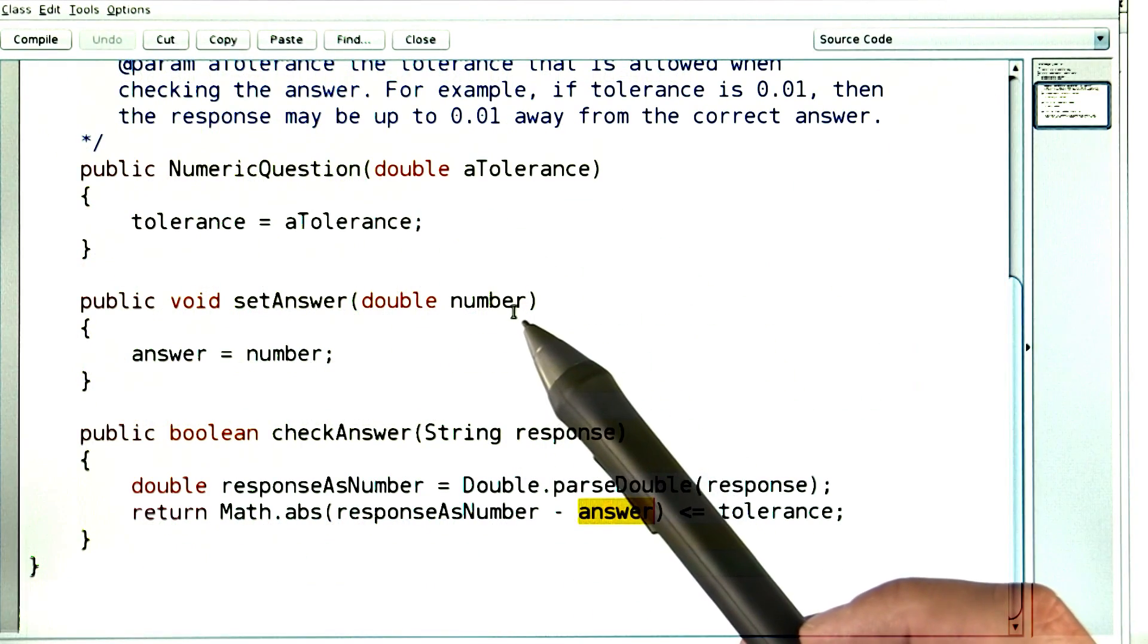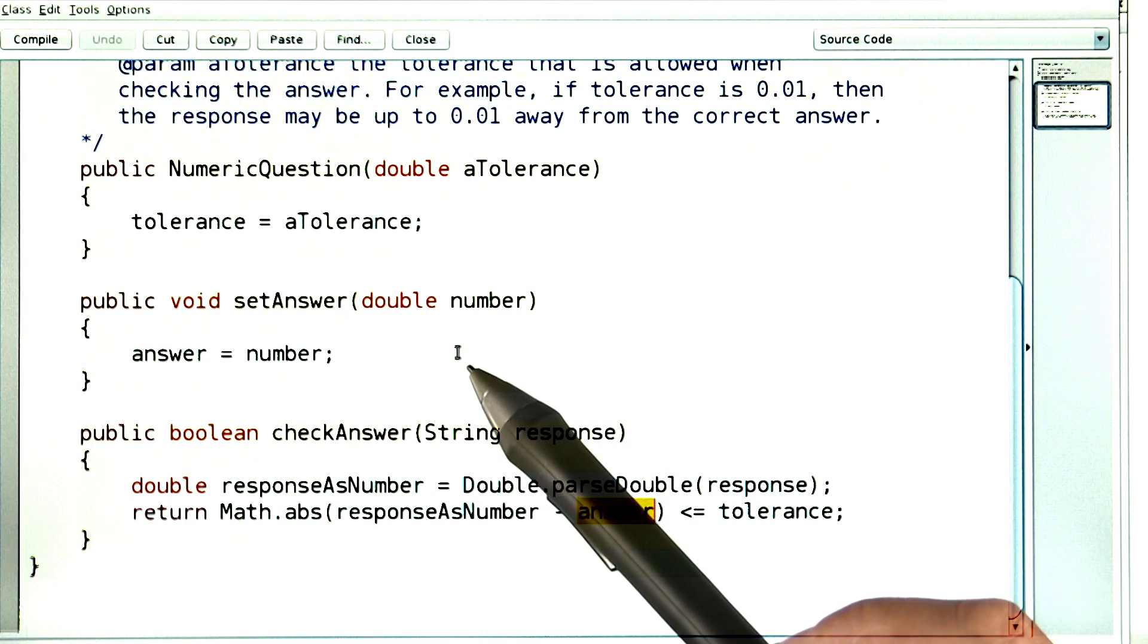Now I could have converted this number into a string, and then passed it on to the set answer method of the question class, and let the question store it as a string. And then I could have converted it back from a string to a number, I suppose.